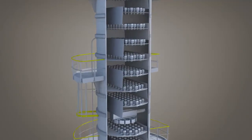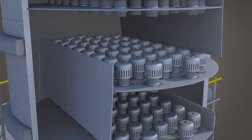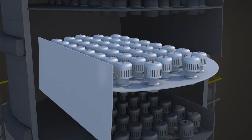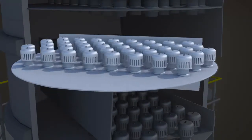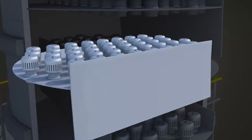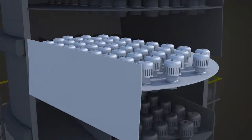A distillation column houses vertically stacked trays. The most common tray is the bubble cap tray. A bubble cap tray collects falling liquid and allows rising vapor to pass through it, promoting the separation of the components flowing through the column.